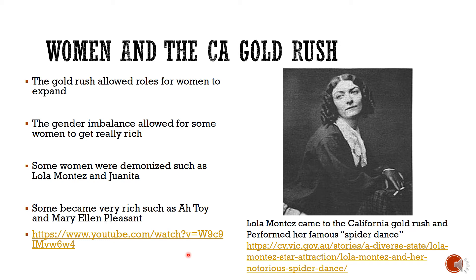Offended by the accusation and the aggressive intrusion into her home, Juanita killed the man. She was tried and hanged for the crime. Her case illustrates the lawlessness of the era and the discrimination faced by women, particularly women of Mexican descent. The man she killed was an Anglo miner, which complicated things further. So while the Gold Rush offered opportunities for some women, for others it could be very dangerous, especially if you stood up for yourself.